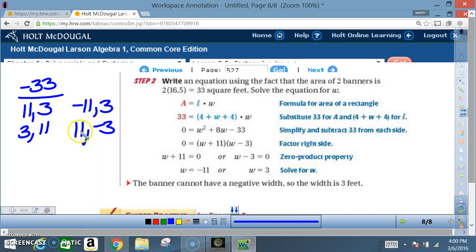So my answer is 0 equals w plus 11 times w minus 3. Now I've got to set them both equal to 0 because of the zero product property. I get w plus 11 equals 0 or w minus 3 equals 0.